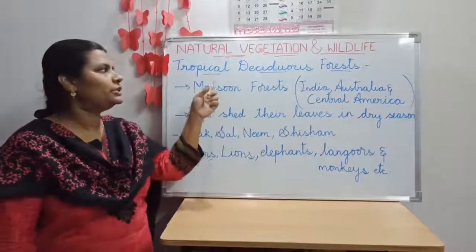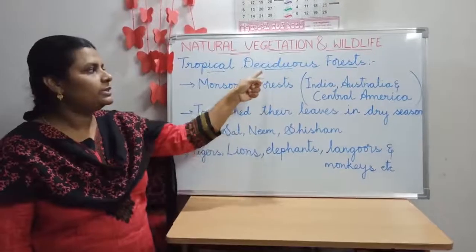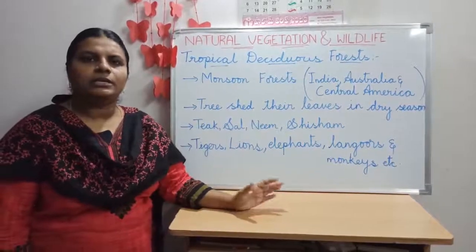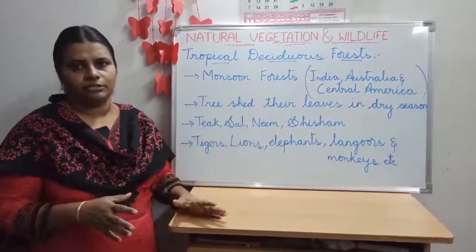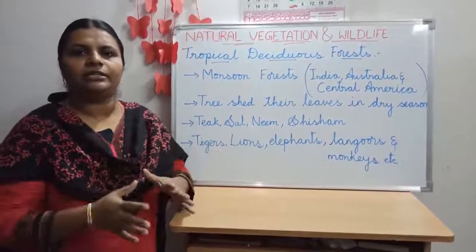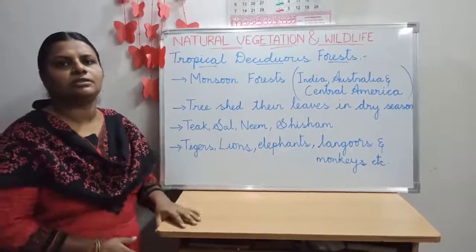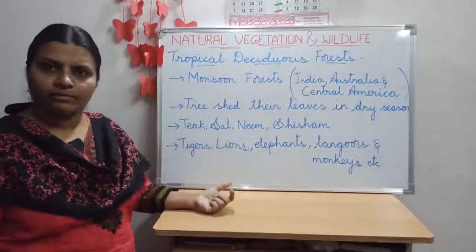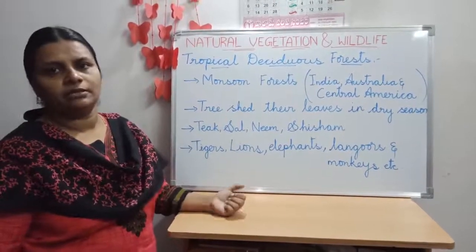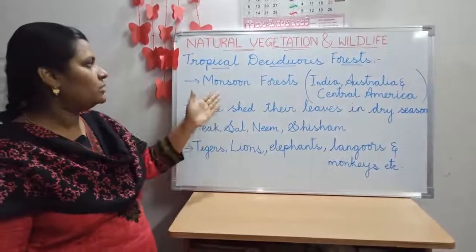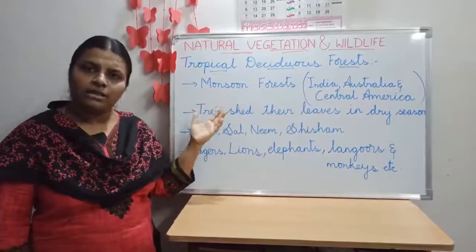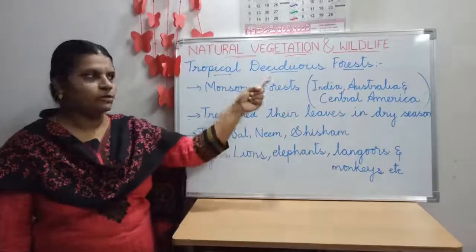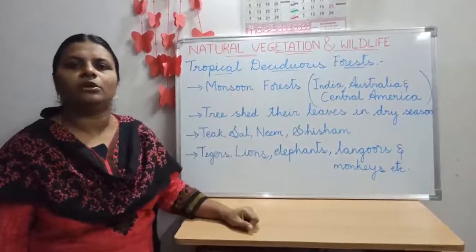Now let us discuss the tropical deciduous forest. The word 'deciduous' tells us that the trees in these forests shed their leaves. In these forests there is seasonal variation — summer to winter, winter to rainy — the seasons change. That's why the trees shed their leaves. They also receive less rainfall compared to evergreen forests and have a distinct dry season. These forests are also called monsoon forests because they receive rainfall through monsoons.